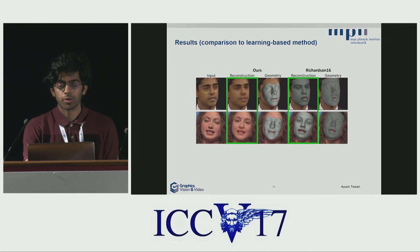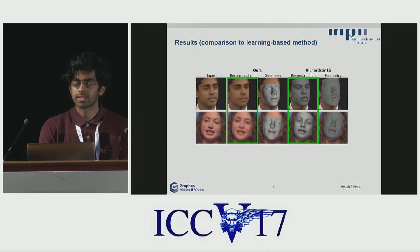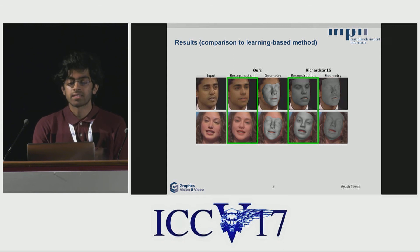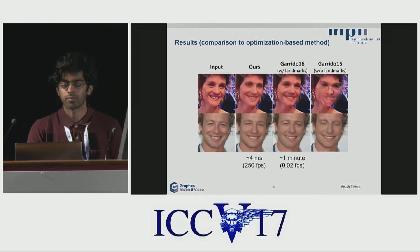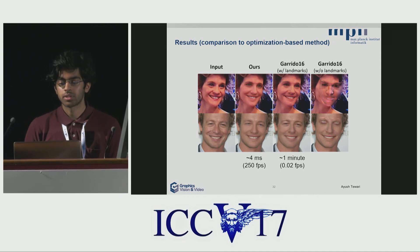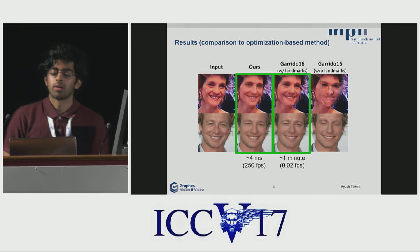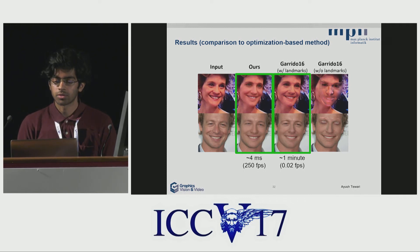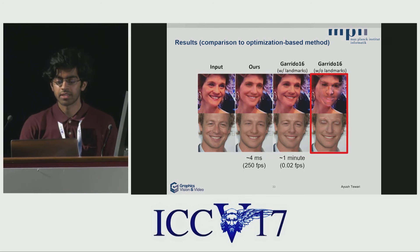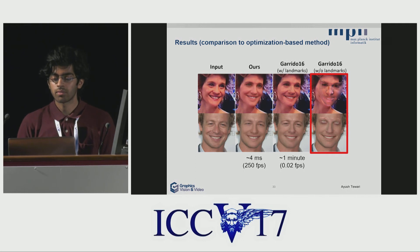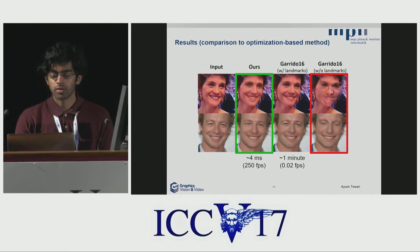We compare our approach to the learning-based approach of Richardson et al., who trained on synthetic images. Unlike their approach, we can directly regress for colored illumination and skin reflectance. Since they train on synthetic images, we also show better generalizability to real images. We also compare our approach to the high-quality optimization-based approach of Garrido et al., obtaining similar quality results while being orders of magnitude faster. Additionally, optimization-based techniques, in the absence of landmark or keypoint-based alignment, get stuck in local minima and do not give plausible reconstructions. However, our method, even without any keypoint-based alignment term, gives good reconstructions.